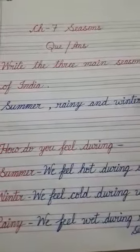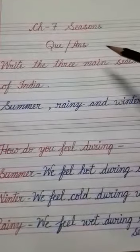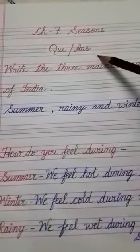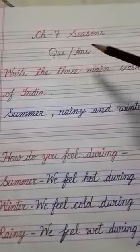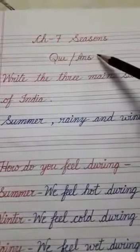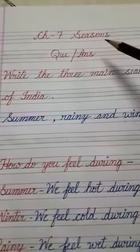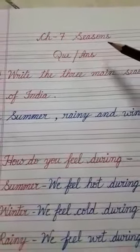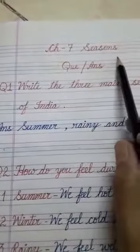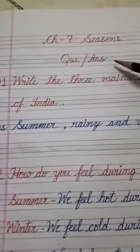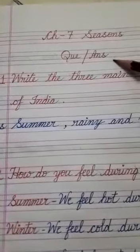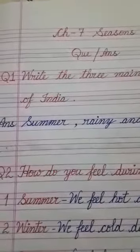Good morning students. The topic of today's video is question answers, taken from chapter 7 seasons from your EVS book. First of all, write down today's date, then chapter 7 seasons on the first line, and the topic — question answers — on the second line. Let's start doing it.